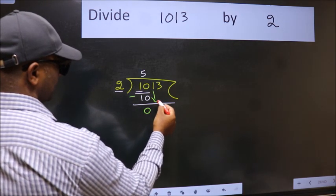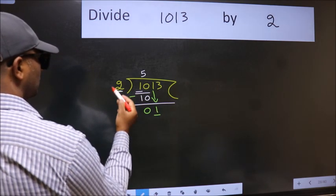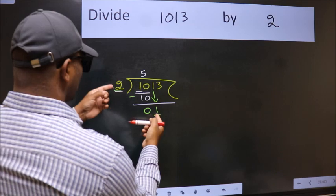After this, bring down the beside number. So 1 down. Now here we have 1 and here 2. 1 is smaller than 2.